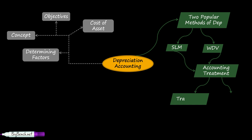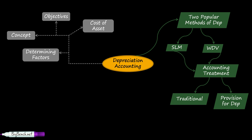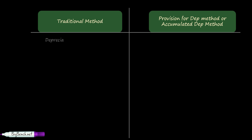We have two methods of accounting treatment: one is the traditional method and the next is the provision for depreciation method. There is no official name called 'traditional method,' so I call it that. Provision for depreciation method is also called the accumulated depreciation method — we will discuss why later.